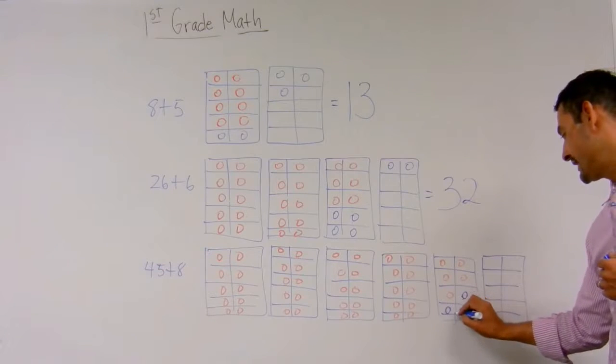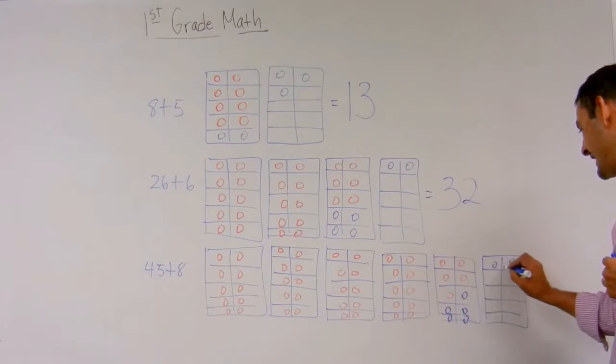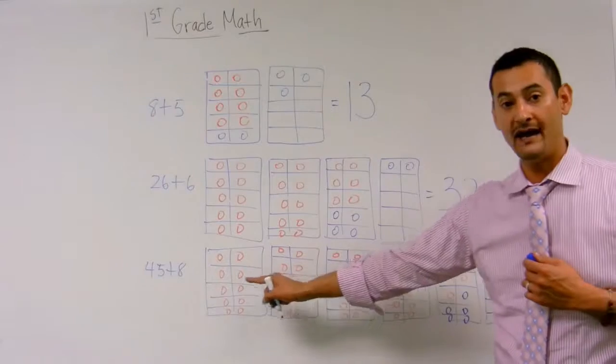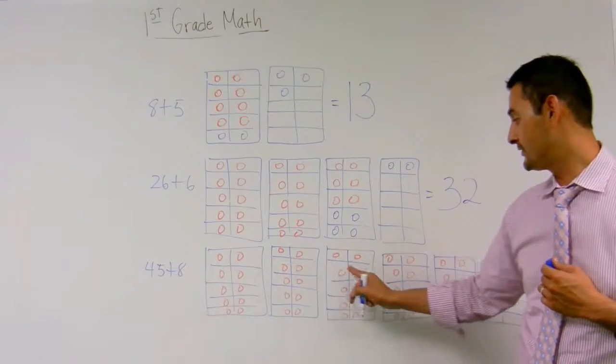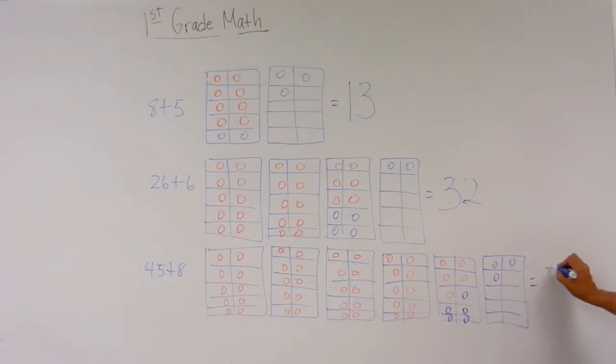One, two, three, four, five, six, seven, eight. How many tens do I have, boys and girls? One, two, three, four, five. How many ones do I have? One, two, three. The answer is fifty-three.